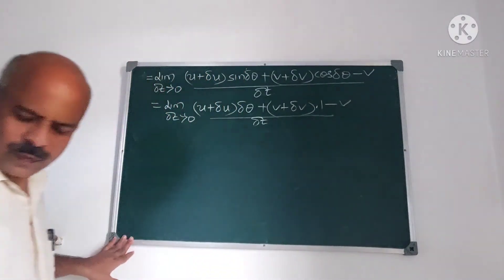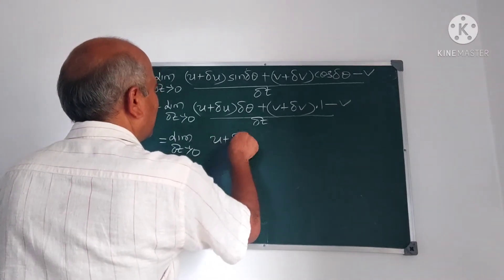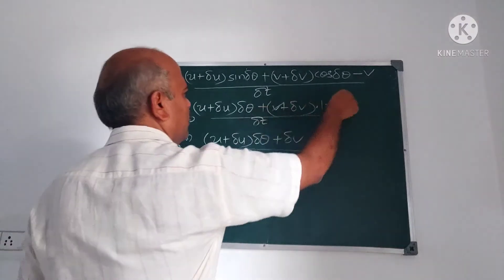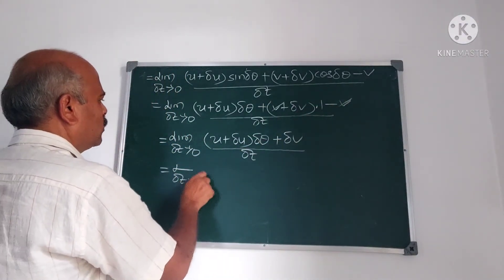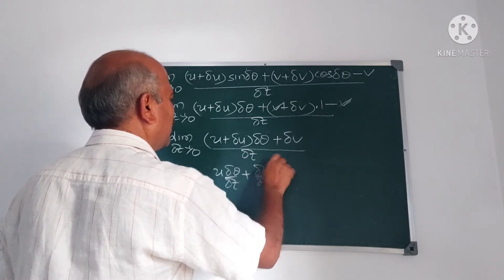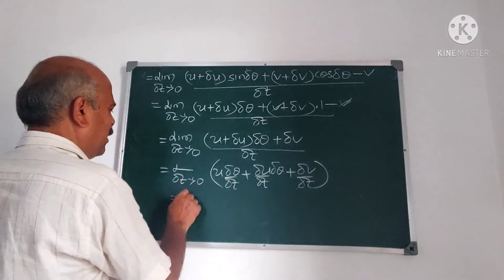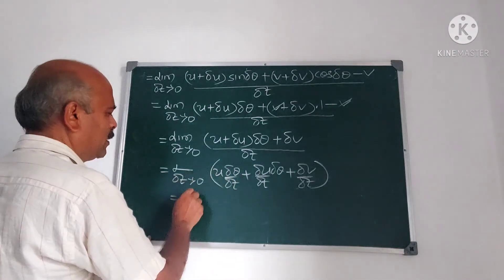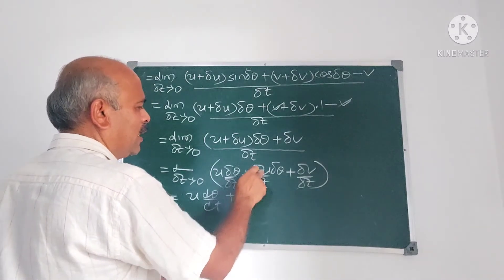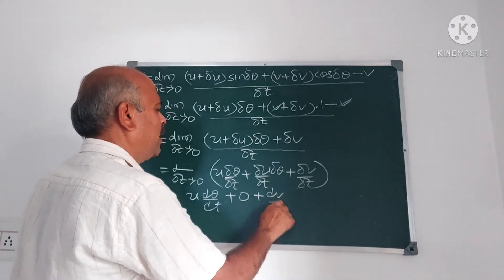The V cancels, leaving: limit as delta T tends to 0 of [U times delta theta by delta T plus delta U times delta theta by delta T plus delta V by delta T]. Taking limits: U times delta theta by delta T gives U times d theta by dt; delta U times delta theta by delta T tends to 0 since delta theta tends to 0; and delta V by delta T gives dV by dt. So transverse acceleration equals U times d theta by dt plus dV by dt.